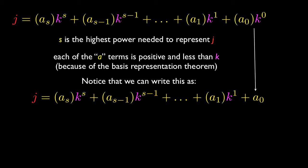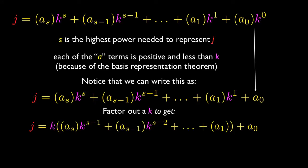Once we get in this form, we can factor out a k out of the first part. And we have a k multiplied by a big thing in parentheses, which I could write with that big bracket over there, plus A sub 0, which is a constant. It's a constant number that's less than k because of the basis representation theorem.